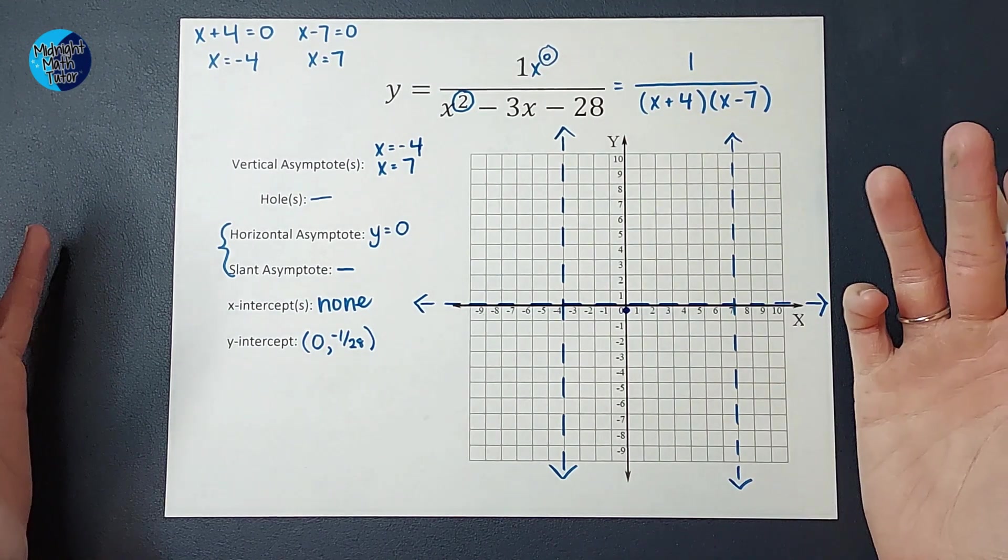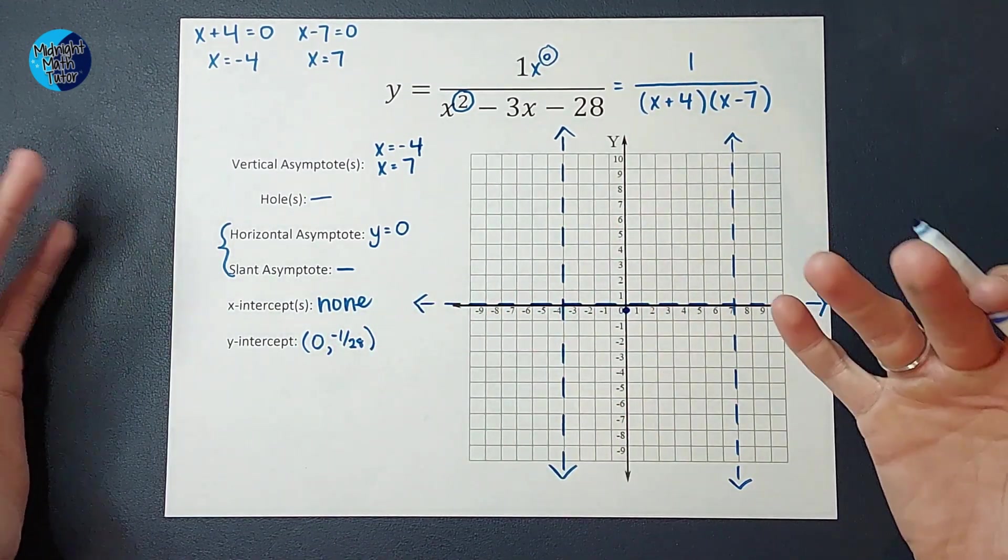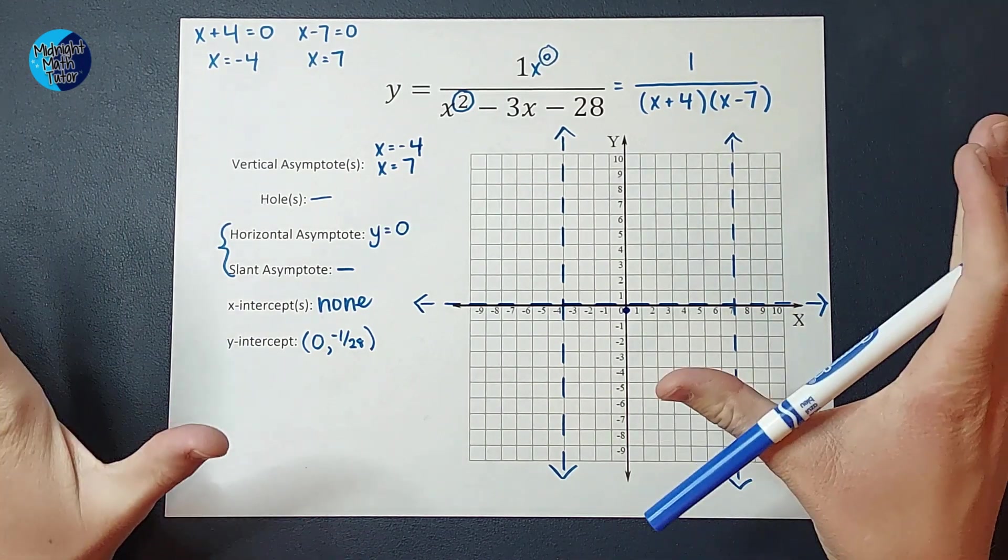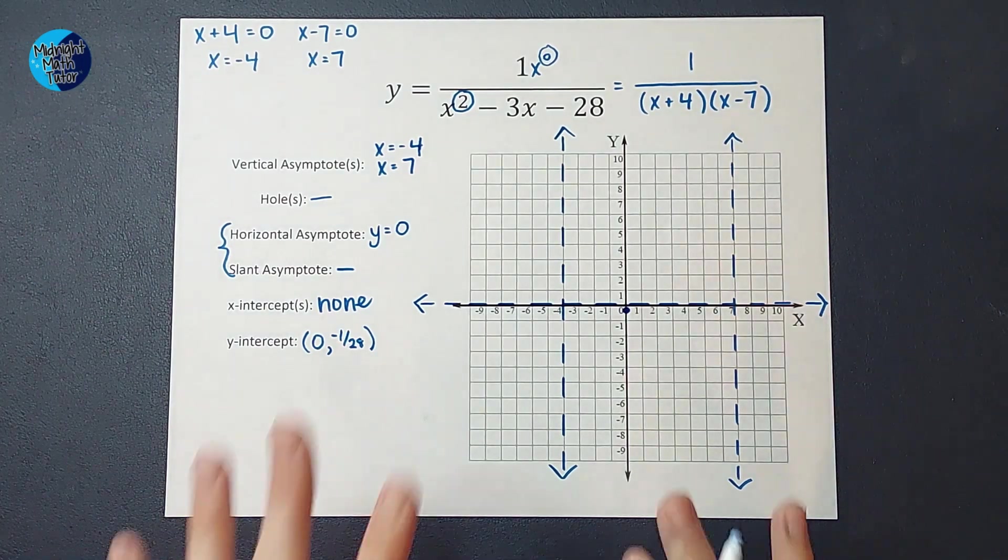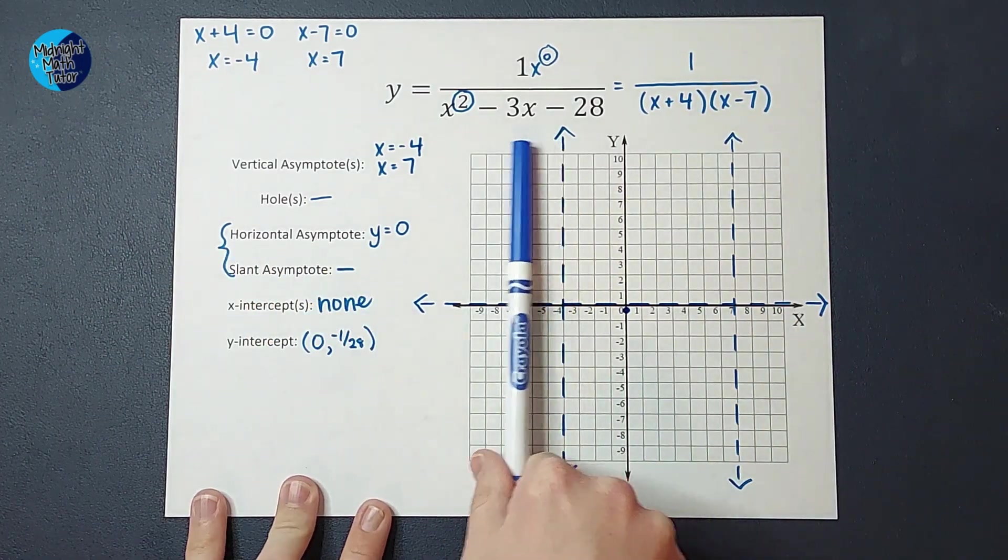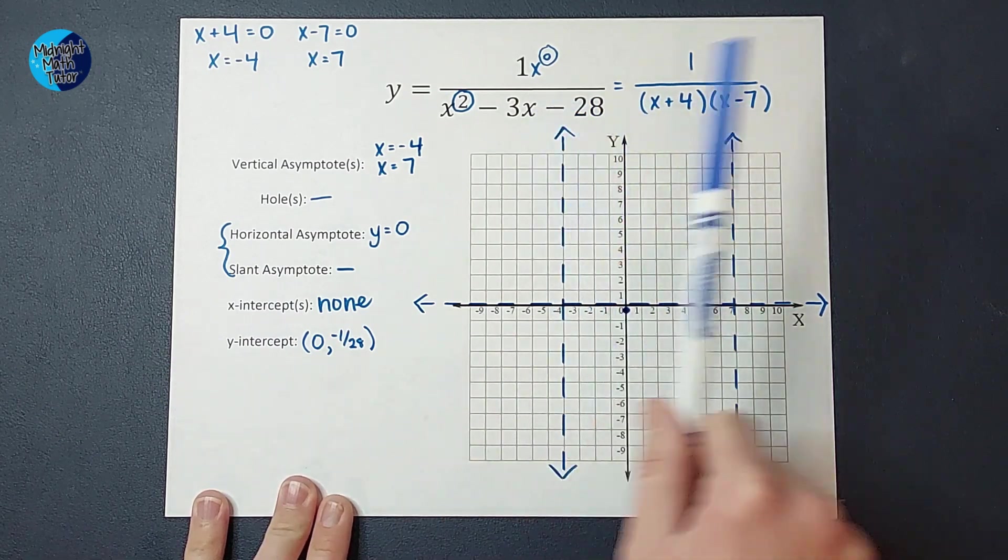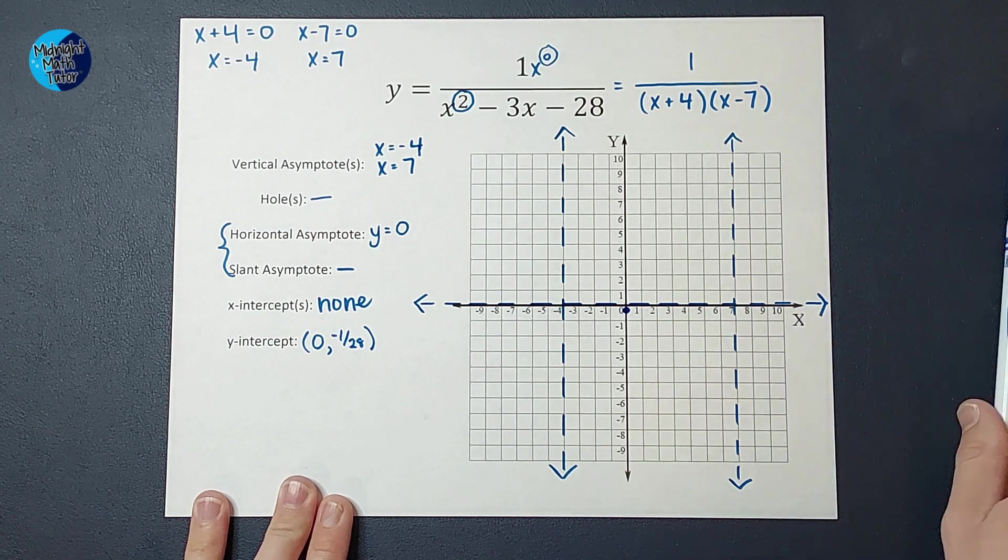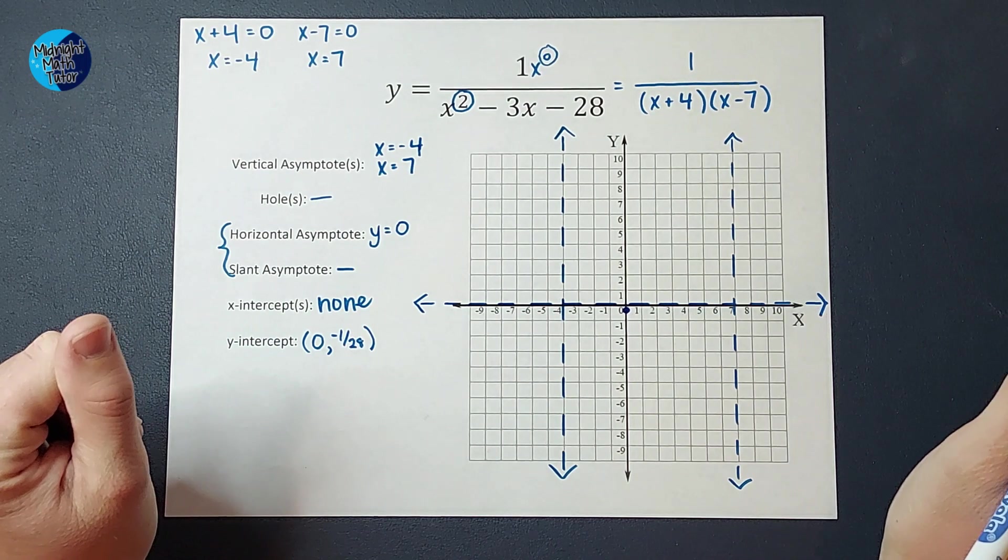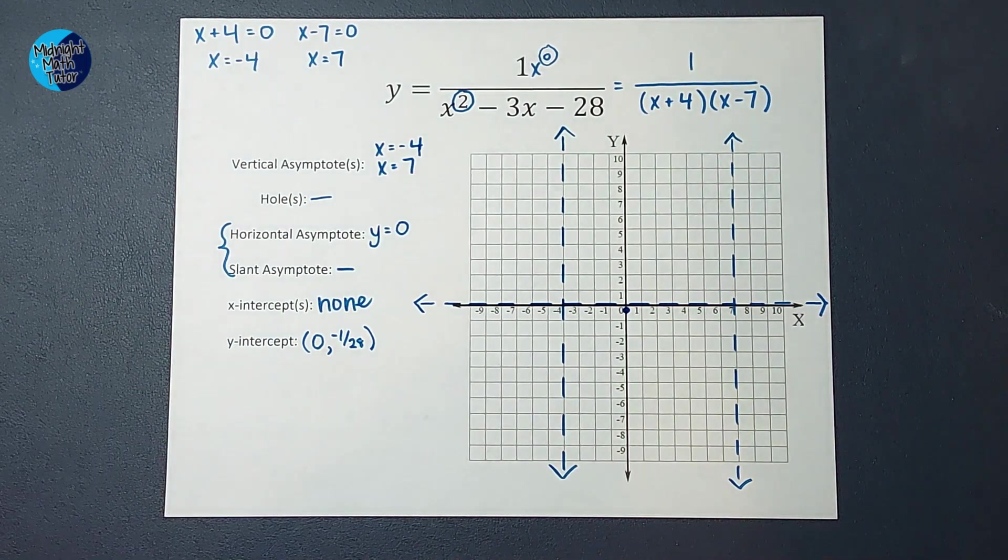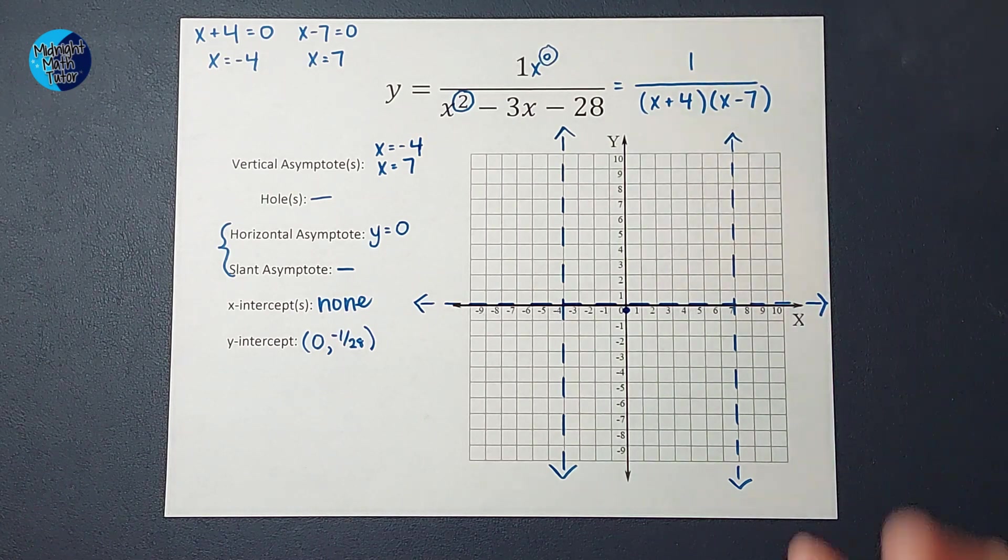From here, what else do I need to know? I've done all these steps. Now, I need to figure out the general shape of my graph. Now, there are a couple of options that you can do here. The first thing you can do is just pick some points to the left of this asymptote. Pick some points between these two asymptotes. And pick some points to the right of this asymptote for x. Get your y's and plot those points. That is one option.